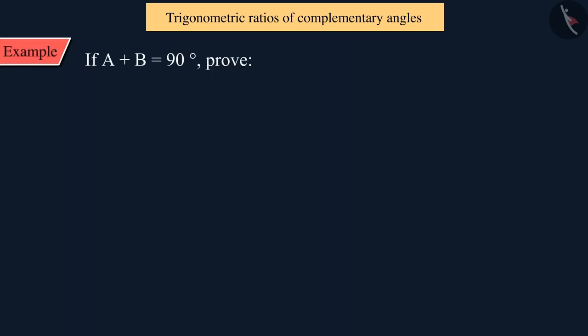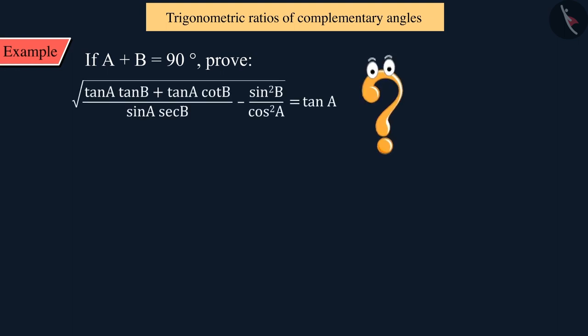If A plus B is equal to 90 degrees, can you prove the following equation?